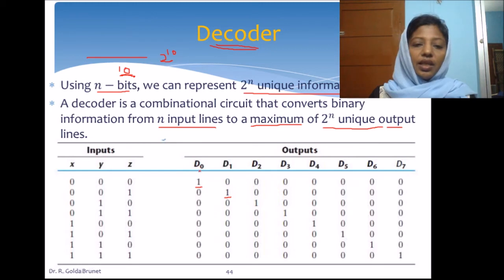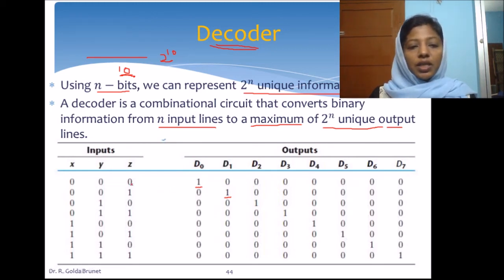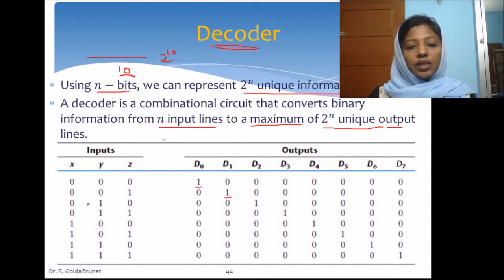In other words, d0 is the minterm x-bar, y-bar, z-bar. D1 is the minterm x-bar, y-bar, z. D2 is the minterm x-bar, y, z-bar, and so on.